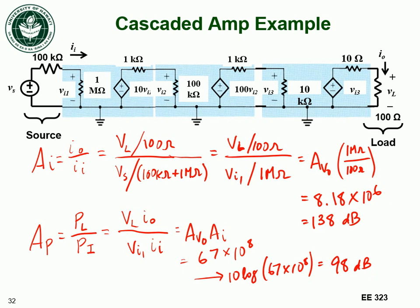We figured out that this three-stage cascaded amplifier has a voltage gain greater than 700, so we met the requirement. We also figured out the current gain and power gain. But we're using three amplifiers, and since we already met the spec, we could potentially make the device cheaper by eliminating some amplifiers and still meeting the specification.